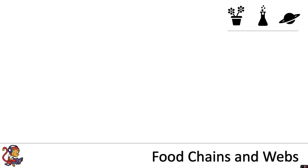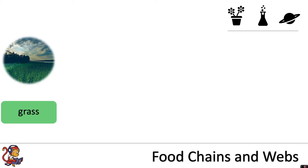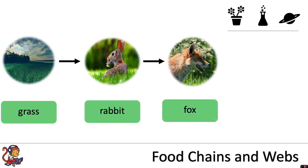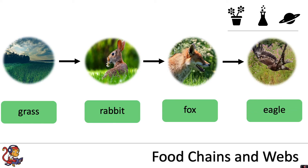In this video we're going to look at food chains and food webs and introduce a lot of new keywords. Let's start off by looking at a basic food chain. We've got some grass which is eaten by a rabbit, the rabbit which is eaten by a fox, and the fox which is eaten by an eagle.